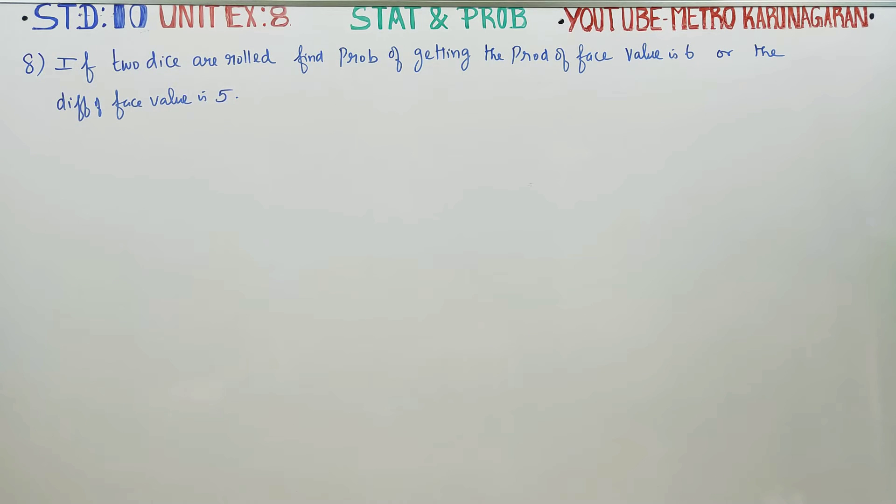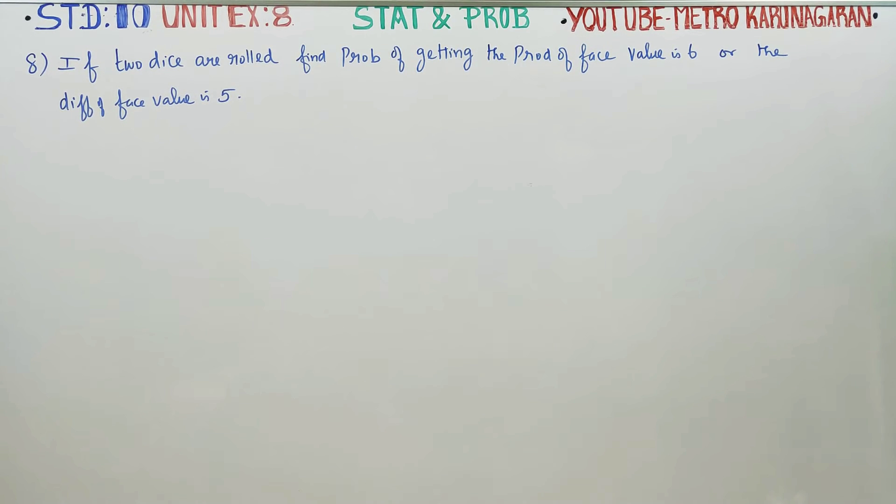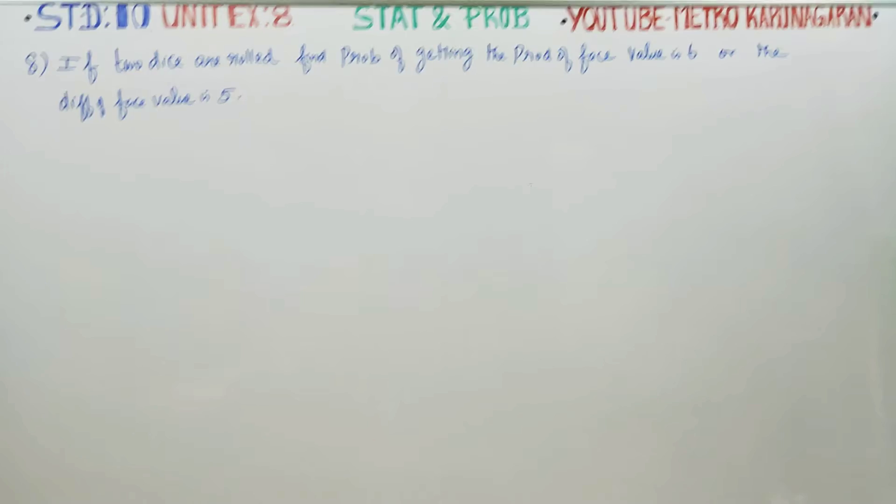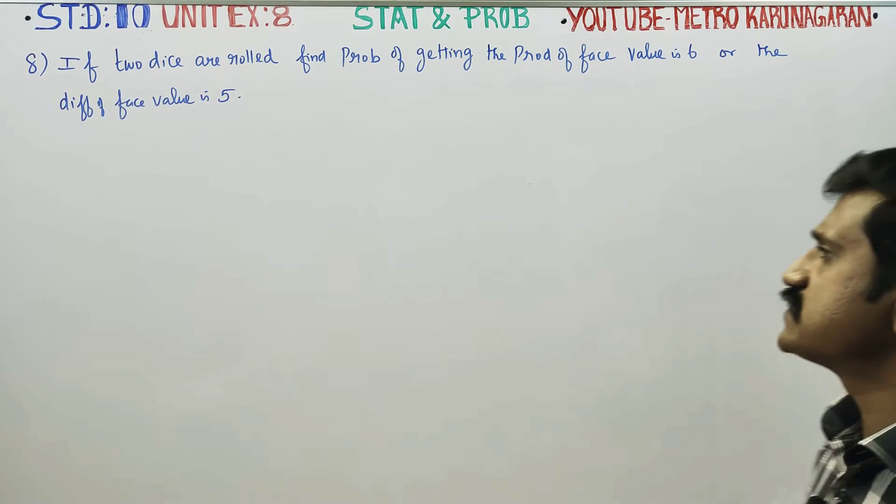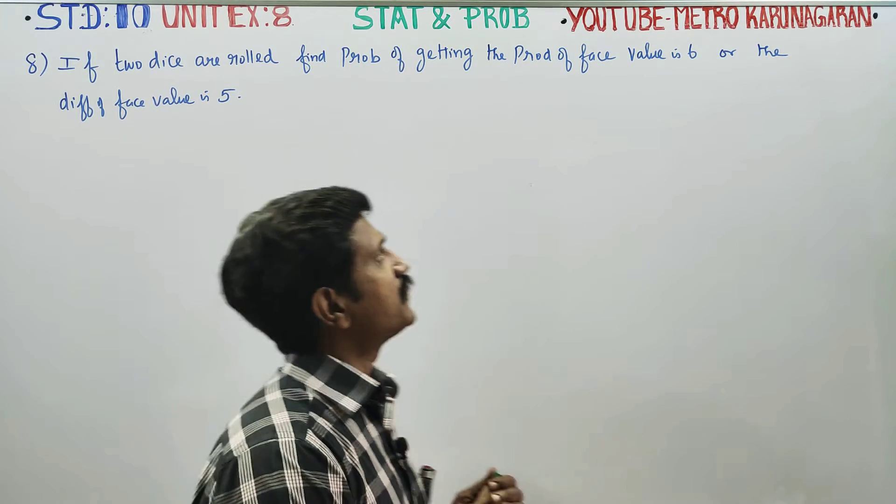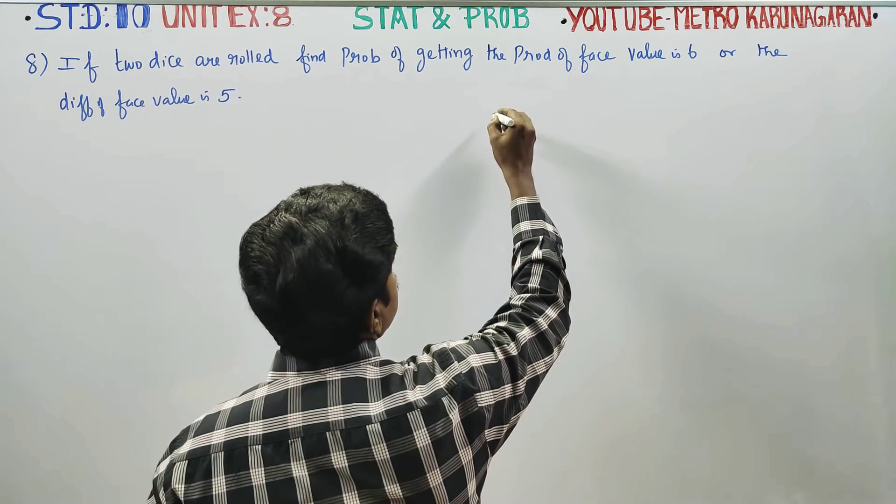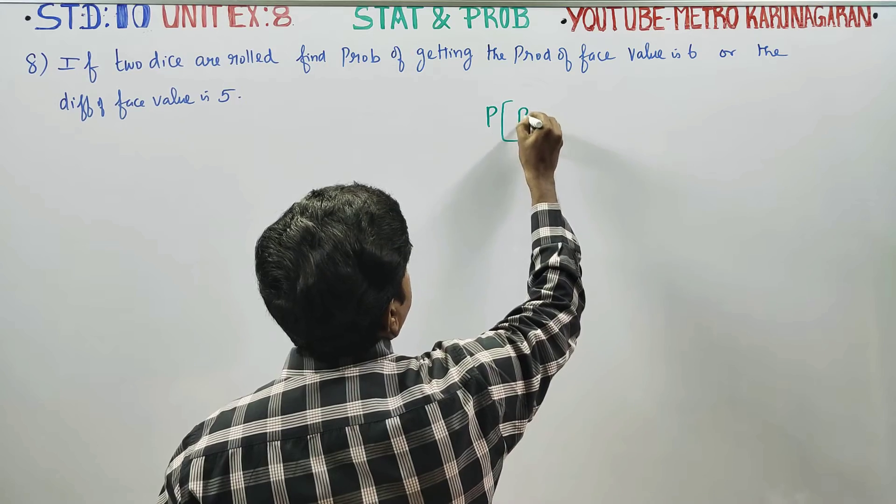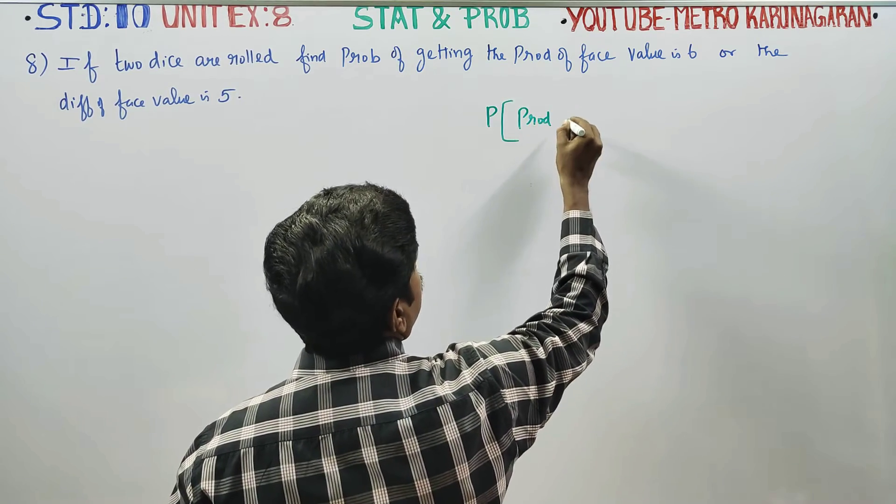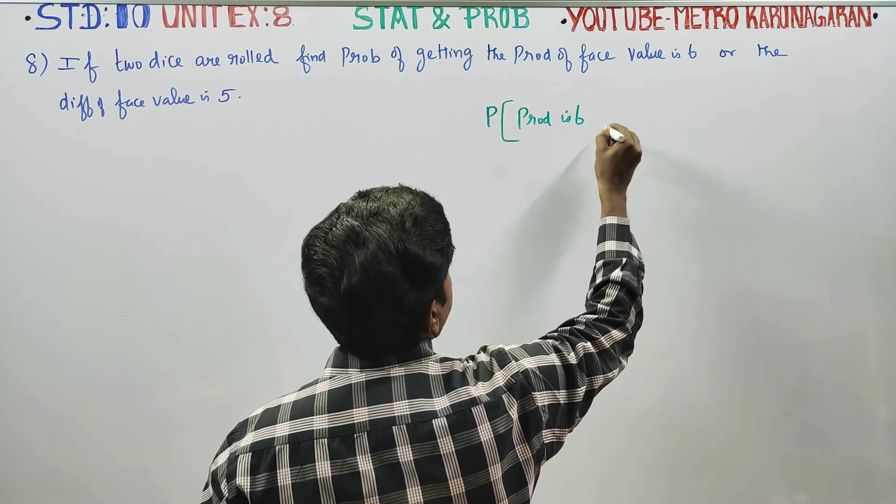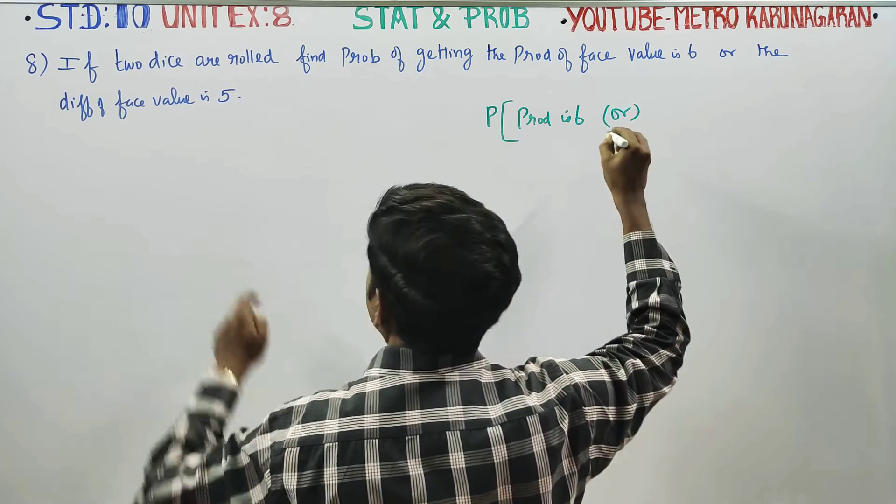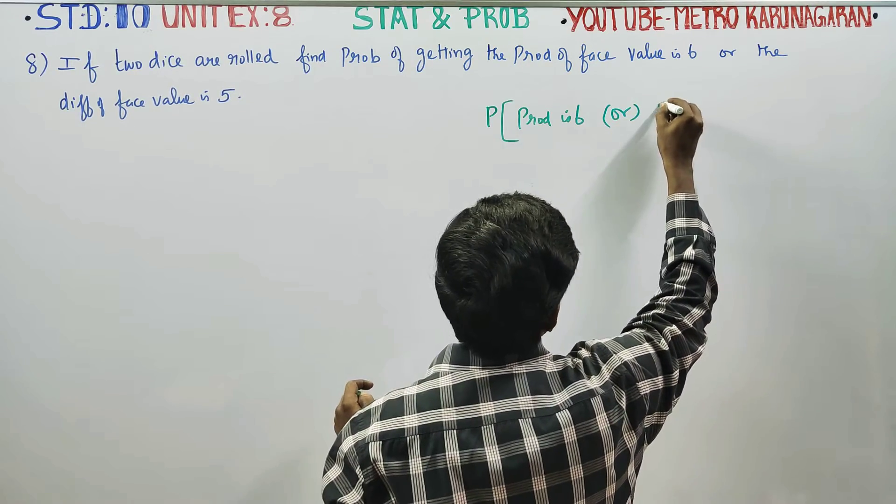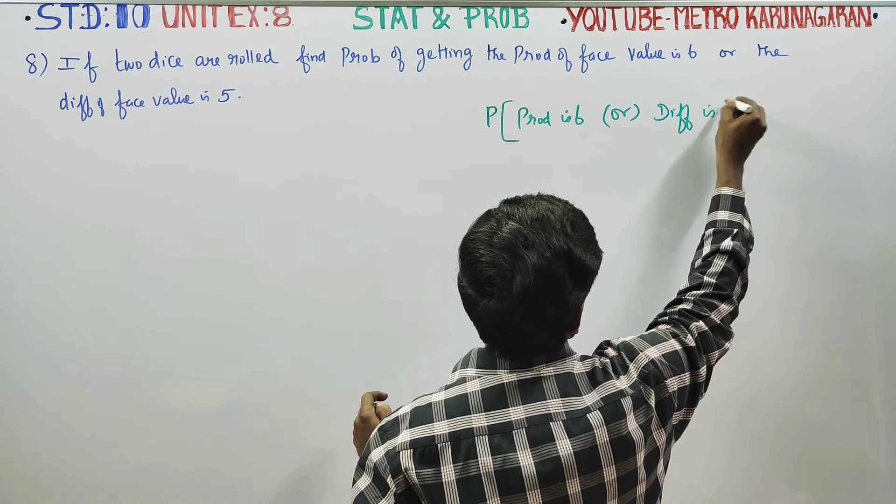Dear 10 standard students, in unit exercise number 8, problem number 8: if two dice are rolled, find the probability of getting the product of face values is 6 and the difference of the face values is 5. The question is, find the probability of product is 6 or difference is 5.